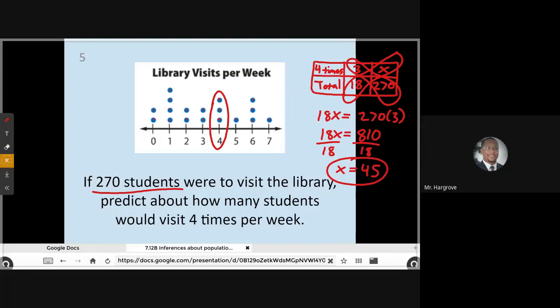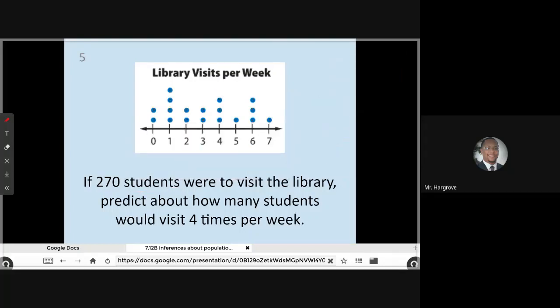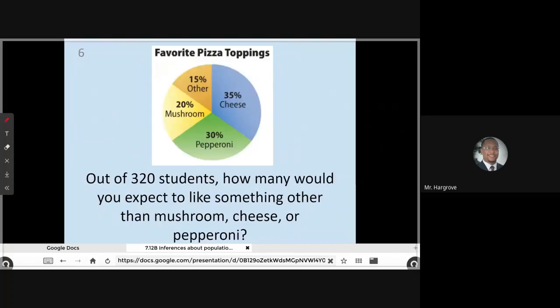All right. Let us clear this and move on to the next example. And here we're looking at a circle graph that is talking about favorite pizza toppings. So it says out of 320 students, how many would you expect to like something other than mushroom, cheese, or pepperoni? So right now they want our attention focused on this other column. So if we see percents, hopefully something in your mind tells you that you're going to use a percent bar.